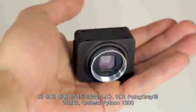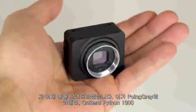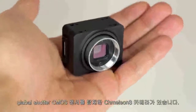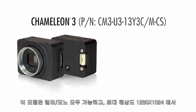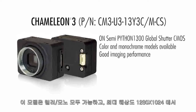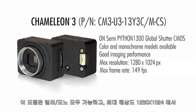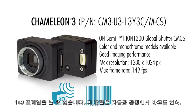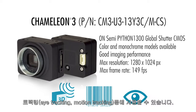So how about an example? I have here our compact Chameleon 3 camera with OnSemi's high-speed Python 1300 Global Shutter CMOS sensor. This model is available in both color and monochrome, has good all-around imaging performance, along with a max resolution and frame rate of 1280x1024 at 149 frames per second, making it ideal for 3D scanning, factory automation such as barcode reading, and tracking applications such as eye, object, and gesture tracking.